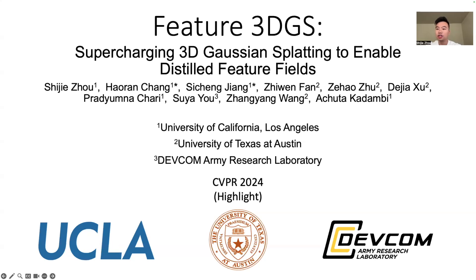Hi everyone, this is Shijie Zhou from UCLA. Today I'm going to present our work, Feature3DGS, Supercharging 3D Gaussian Splatting to Enable Distilled Feature Fields. This paper is also selected as a highlight paper at CVPR 2024.